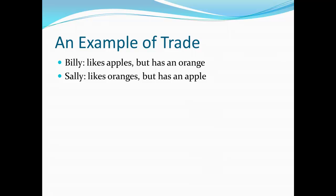To give a simple example of trade, suppose we have two people, Billy and Sally. Billy really likes apples but happens to have an orange. Sally really likes oranges but happens to have an apple. In this case, it should be blatantly obvious that the two could benefit from trading — Billy handing over his orange to Sally, and Sally handing her apple to Billy. So here it's obvious that both can benefit from trade.